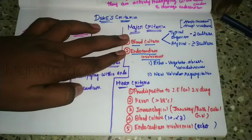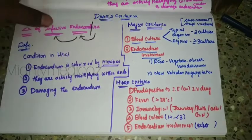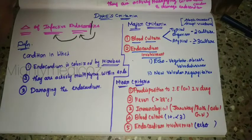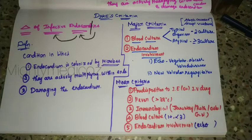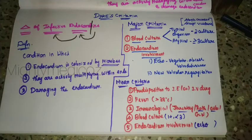So to summarize the minor criteria: fever, risk factors like IV drug abuse, immunological lesions, and in other cases — Janeway lesions, Roth spots, Osler's nodes — these are all part of infective endocarditis minor criteria.